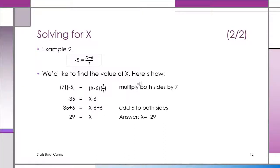In this problem we have minus 5 equals (x minus 6) divided by 7. Multiply both sides by 7. Now you have x minus 6 on the right and minus 35 on the left. Add 6 to both sides. So now you have minus 29 equals x.